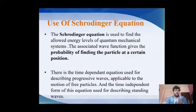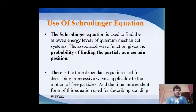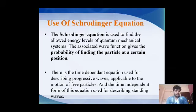The use of the Schrödinger equation is quite simple — it gives the position of a particular particle in a particular space via the wave function. There are various uses: the time-dependent equation is used to describe progressive waves, and the time-independent equation is generally used for standing waves.